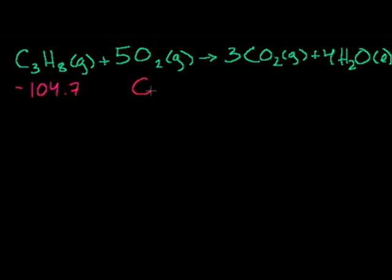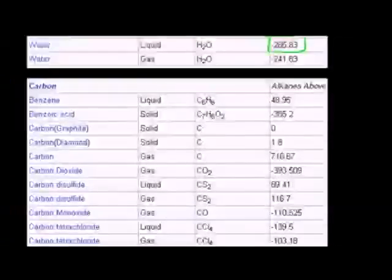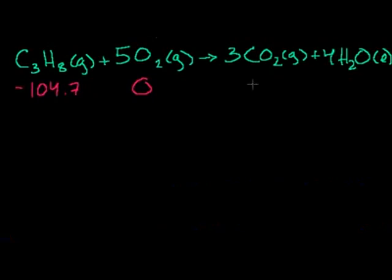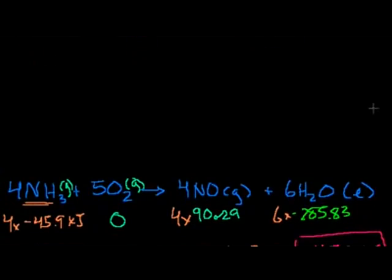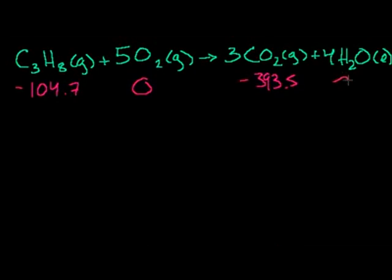The heat of formation of oxygen in its elemental state is zero. Carbon dioxide is a gas with a heat of formation of minus 393.5 kilojoules per mole. And water we already figured out — it's minus 285.83 kilojoules per mole.